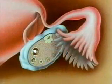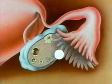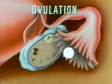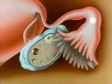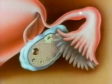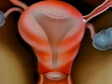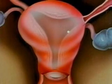Each month one egg matures and passes through the ovarian wall into the fallopian tube. This is called ovulation. The egg travels through the tube towards the uterus. The egg has about 12 hours to be fertilized within the tube, then become implanted on the uterine wall.